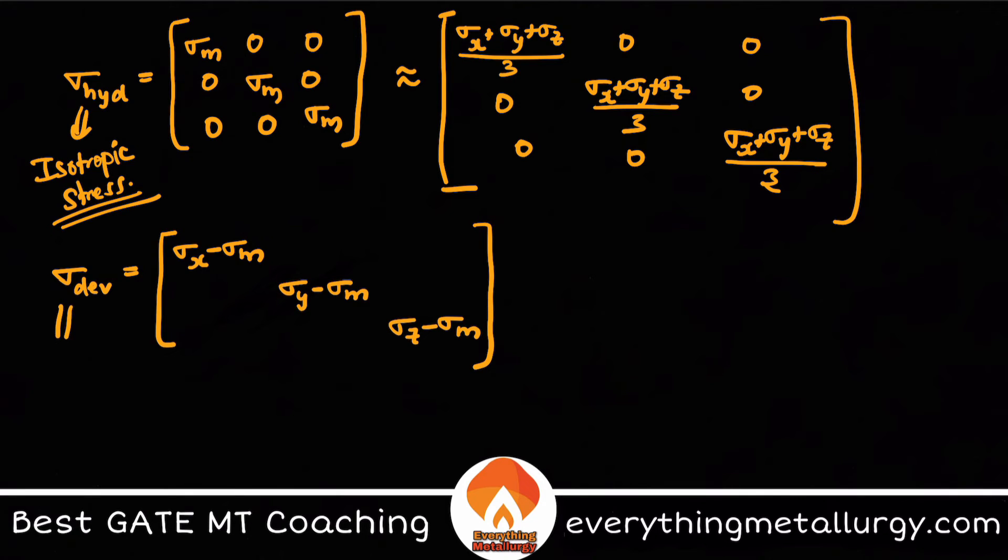How we got this: I got this equal to sigma minus sigma hydrostatic. The deviatoric part will be equal to the total stress tensor sigma ij minus the hydrostatic part. Again, do not forget here you have the regular shear stress components.